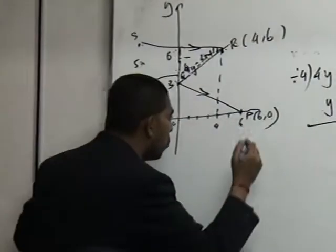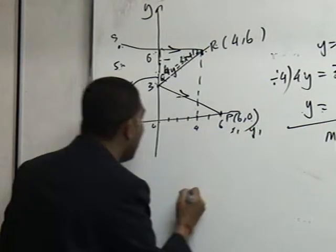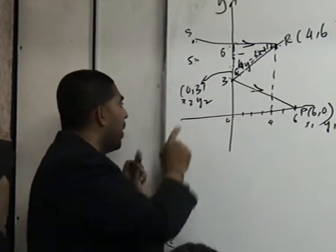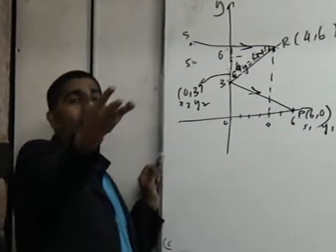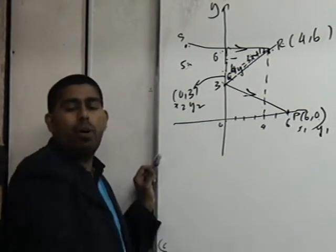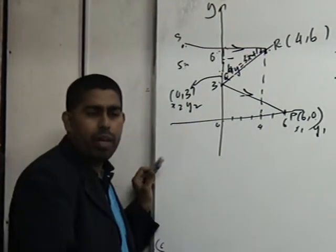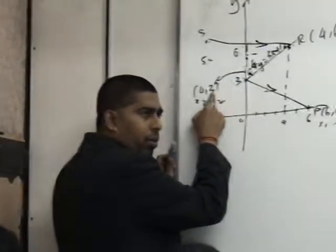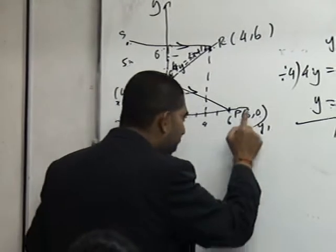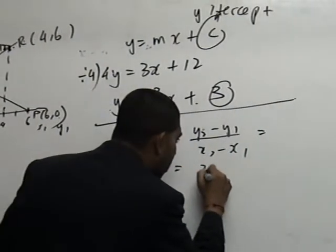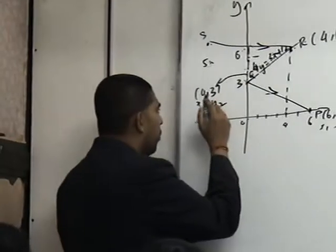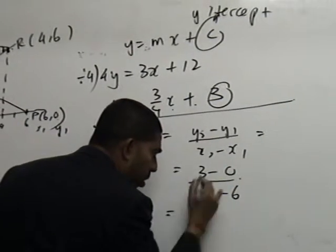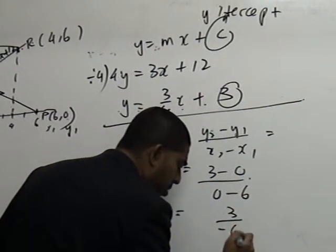So my gradient of PQ is equal to Y2 minus Y1 over X2 minus X1. I call this X1, Y1, I call this my X2, Y2. Now, if some of you might ask me, can I call this X1, Y1 and can I call this X2, Y2? By all means, it's up to you. Whichever you want to call X1, Y1 or X2, Y2, it's up to you. So Y2 minus Y1, what is my Y2? 3. And what is my Y1? 0. So 3 minus 0. And what is my X2? 0. And what's my X1? 6. So 0 minus 6. What do I get? 3 over negative 6.